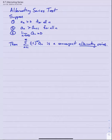Section 8.7: the alternating series test. The alternating series test requires three things. Suppose we have a sequence a_n such that: number one, all the terms in that sequence are positive; number two, that sequence is strictly decreasing; and number three, the limit of that sequence is zero.